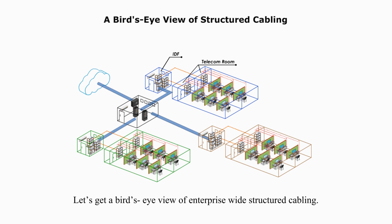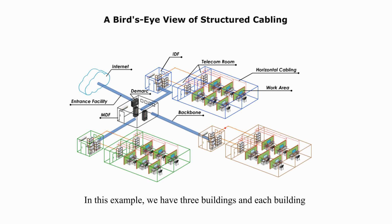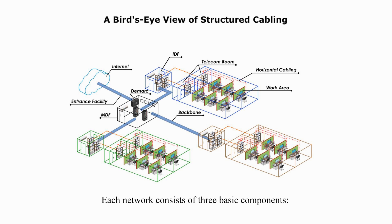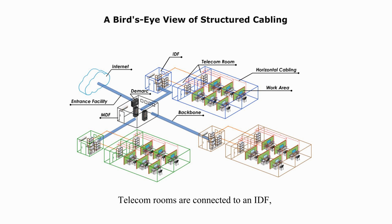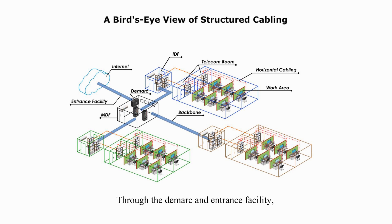Let's get a bird's-eye view of enterprise-wide structured cabling. In this example, we have three buildings, and each building may have two or more local area networks in a star topology. Each network consists of three basic components: telecom room, horizontal cabling, and work area. Telecom rooms are connected to an IDF, and all IDFs are connected to the MDF through the DMARC and entrance facility. The internal network is connected to the Internet.